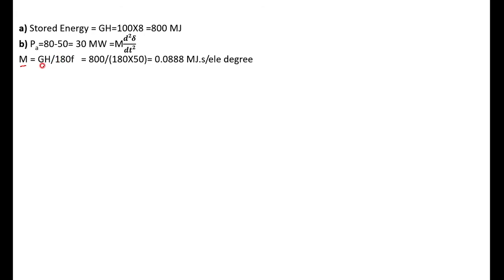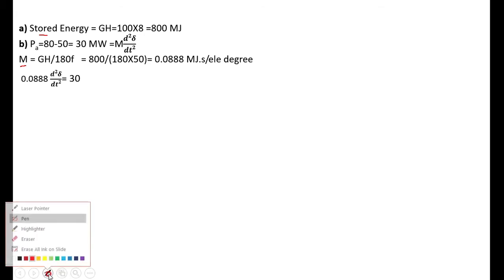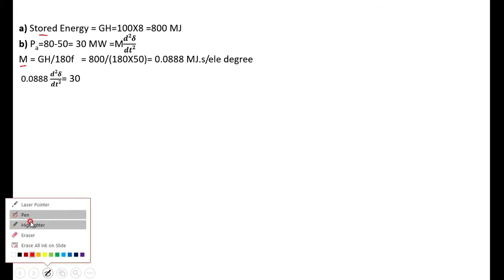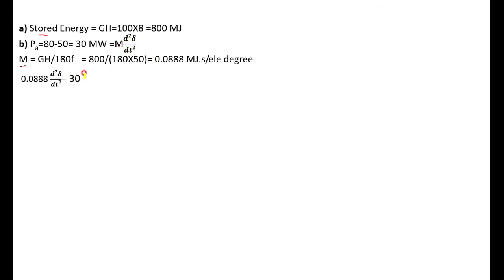Here we have taken 180, so it should be in degrees. GH is already calculated — that is nothing but the stored energy — it is 800 divided by 180. Since the frequency is given as 50 Hz, the angular momentum M is 0.0888 MJ·s per electrical degree. The Swing equation is M·d²δ/dt² = Pa. With M equal to 0.0888, substituting into the equation gives M·d²δ/dt² equal to 30.